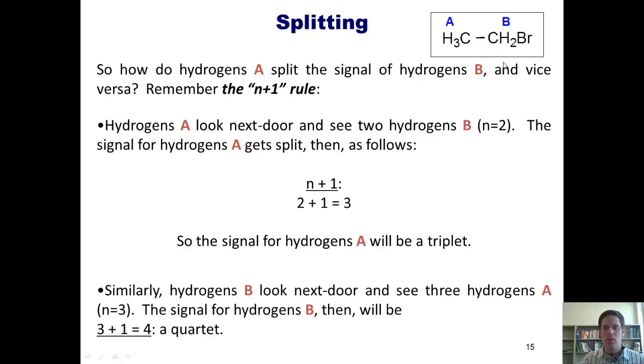Similarly, hydrogens B look next door and see three hydrogens A. The signal for hydrogens B then will be 3 plus 1, a quartet. You're welcome to repeat this slide if you want until you get this down.